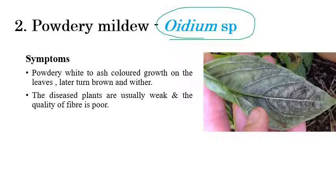Powdery mildew is caused by Oidium species. White, ashy, powdery growth can be seen on the lower surface of the leaves. Later, the leaf slowly starts to turn brown. Powdery mildew-infected jute plants have poor fiber quality and are very weak because the powdery growth slowly weakens the plant.